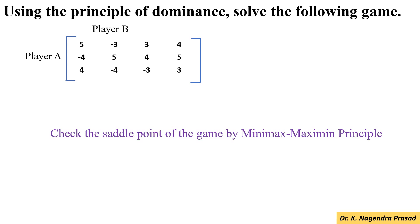For this, first we have to determine the maximin value. First, identify the minimum value in each row and write it down under the row minimum. In the first row, the minimum value is minus 3.